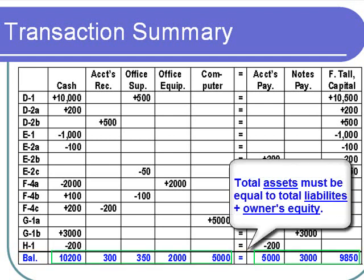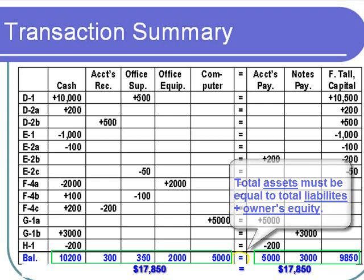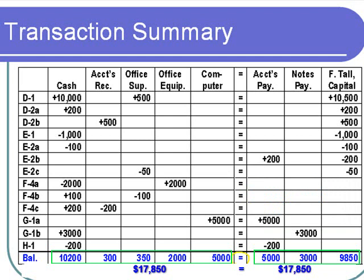If we add up all the equities, we'll find that they equal all of the asset account balances. Therefore, everything checks out, and we do have our equality between assets and equities. This is a good thing since it indicates that no obvious mistakes have been made.